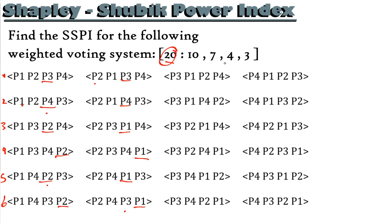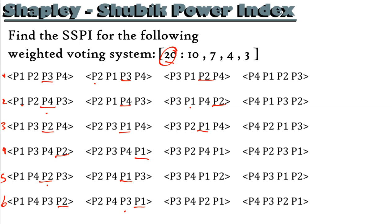Moving to the third column — coalitions starting with player 3: Player 3 has 4, player 1 has 10, player 2 has 7 — 4 plus 10 plus 7 equals 21, so player 2 is pivotal. Player 3 has 4, player 1 has 10, player 4 has 3 — that's 17, not enough, we need the fourth player. Player 3 has 4, player 2 has 7, player 1 has 10 — that's 21, player 1 is pivotal. Player 3 has 4, player 2 has 7, player 4 has 3 — that's 14, not enough, we need the fourth player.